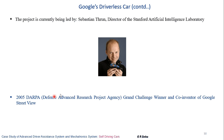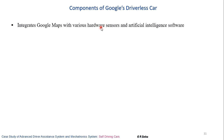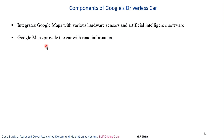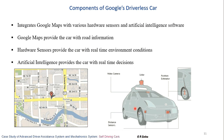The components of Google's driverless car integrate Google Maps with various hardware sensors and artificial intelligence software. Google Maps provides the car with road information, hardware sensors provide real-time environmental conditions, and artificial intelligence provides real-time decisions. The hardware includes LiDAR, a position estimator sensor, distance sensors, and a video camera.